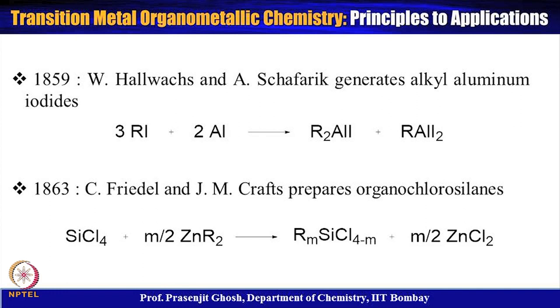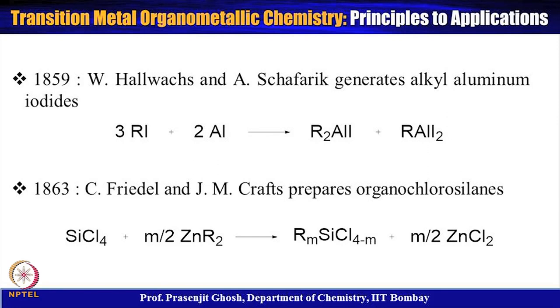In 1863, C. Friedel and C.M. Crafts prepared organosilane compounds by the reaction of silicon tetrachloride with dialkyl zinc, giving alkyl silane chloride and zinc dichloride. This was a different type of reaction — a transmetallation reaction — where the zinc alkyl migrates onto silicon and zinc itself abstracts the chlorine to become zinc chloride.